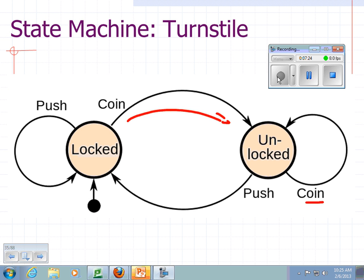If you put a coin in again, well, that's why it's badly designed. You shouldn't be able to accept coins, but if you put a coin in, nothing happens. It stays unlocked. But as soon as you push this turnstile, you're allowed in to wherever it was, but now the turnstile is locked. So, this is a model of a turnstile as a state machine.